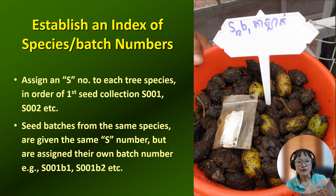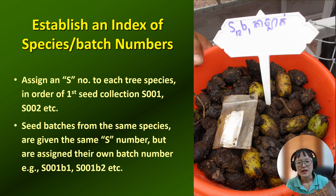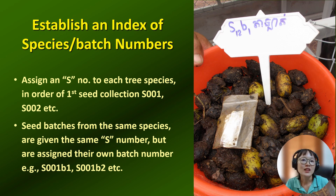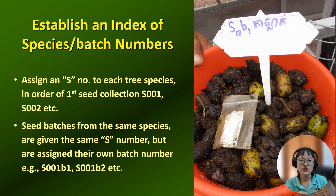For example, the first tree species that you work with, you assign S001 or S1. The number of digits depends on how many tree species you work with. Not only the species, we can also assign a batch number for each seed collection that we do for that same tree species.